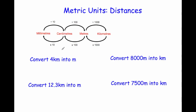Now we're going to look at how to convert between meters and kilometers. We times by 1000 to change from kilometers into meters, and divide by 1000 to change from meters into kilometers. Change 4 kilometers into meters — we times by 1000, so 4 times 1000 equals 4,000 meters. Convert 8,000 meters into kilometers — we divide by 1000, so that would be 8 kilometers.